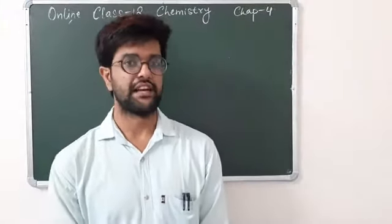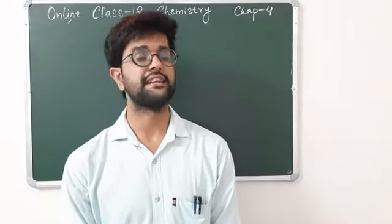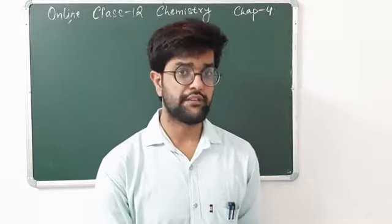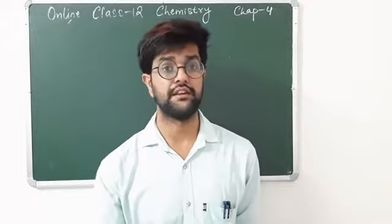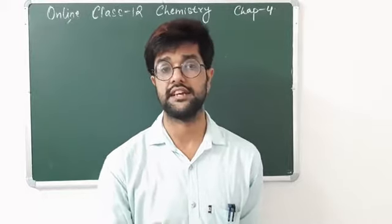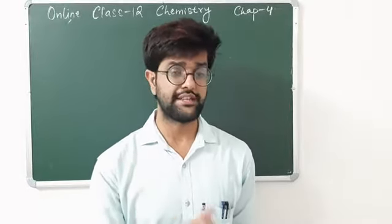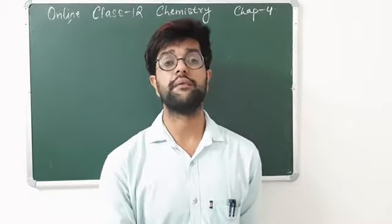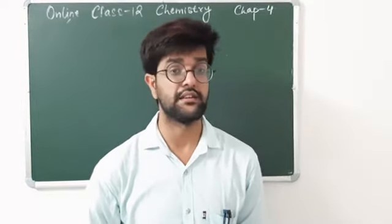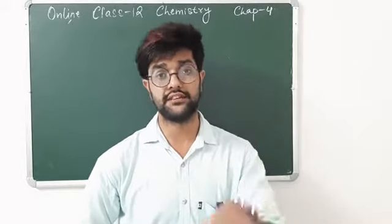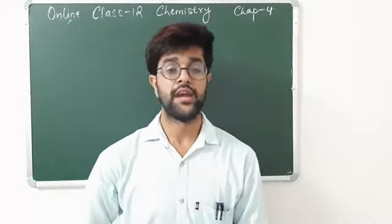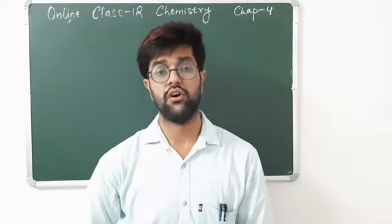Good evening class. In our previous class we started our new chapter in chemistry - chemical kinetics, chapter 4. We studied what chemical kinetics deals with: the rate of reaction, whether the reaction is very fast or very slow. We learned about various conditions, that reactions are bimolecular, trimolecular, how each step depends on the other. We also studied that reactant is converted into product, and with time the concentration of reactant decreases while the concentration of product increases. On the basis of graphs we studied and made equations of rate law and rate constant.